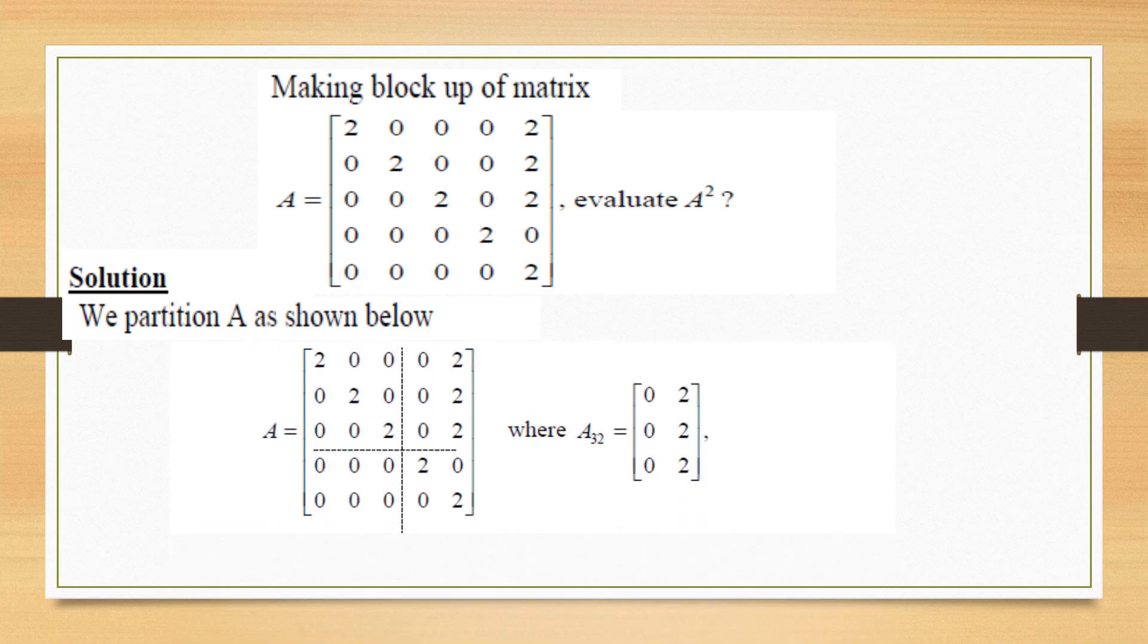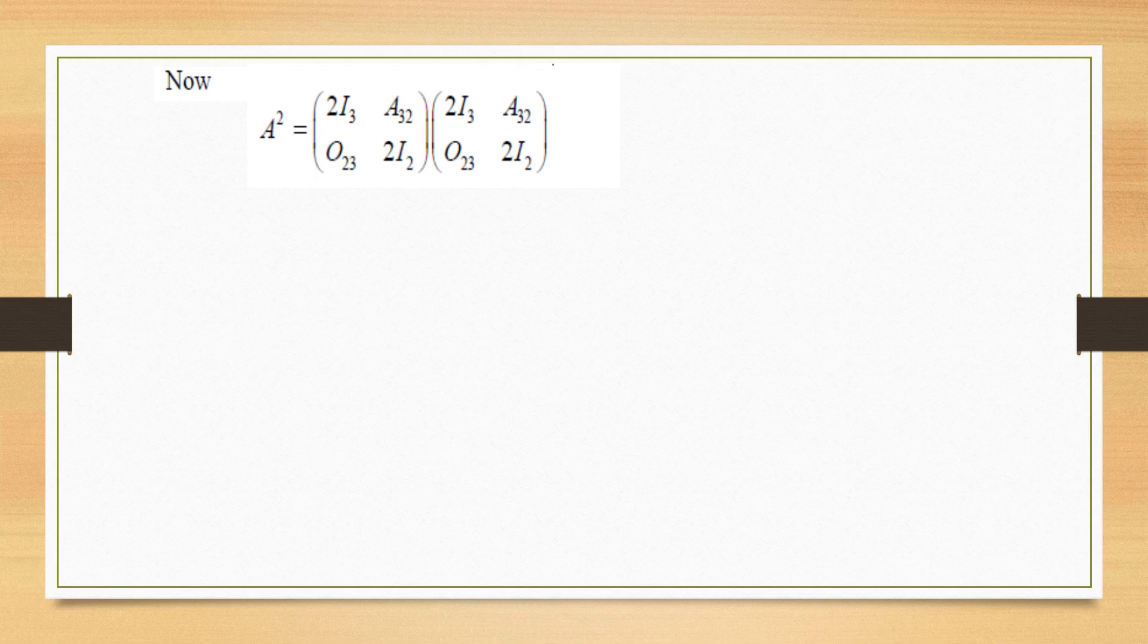We partition A by inserting these lines. We have partitioned this A matrix into 4 matrices which are named as a 2 by 2 matrix which consists of sub-matrices.